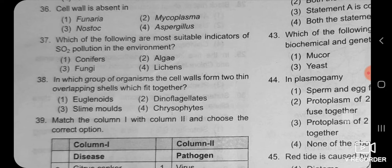Next MCQ options include mycoplasma, aspergillus, and nostoc. We have to know which organisms belong to which kingdom. Mycoplasma is the smallest cell without any membrane — that means it is without cell wall — and it is an example of kingdom monera.